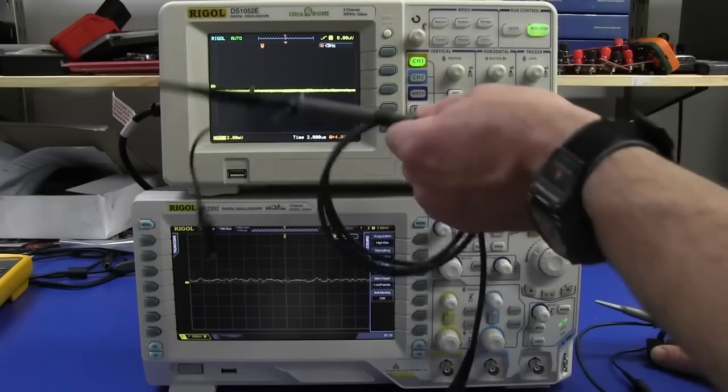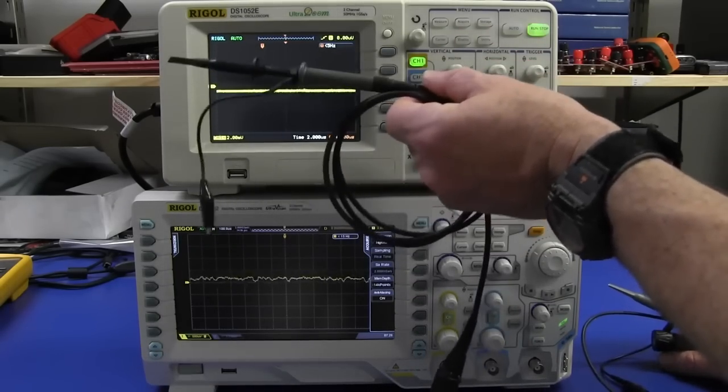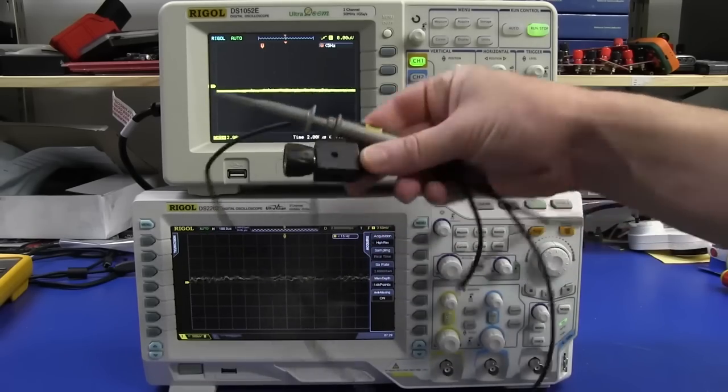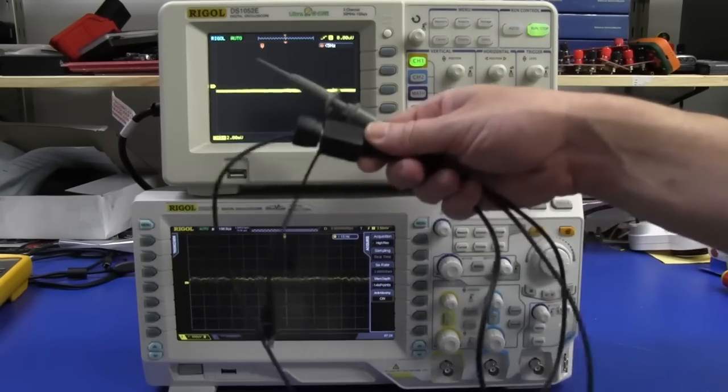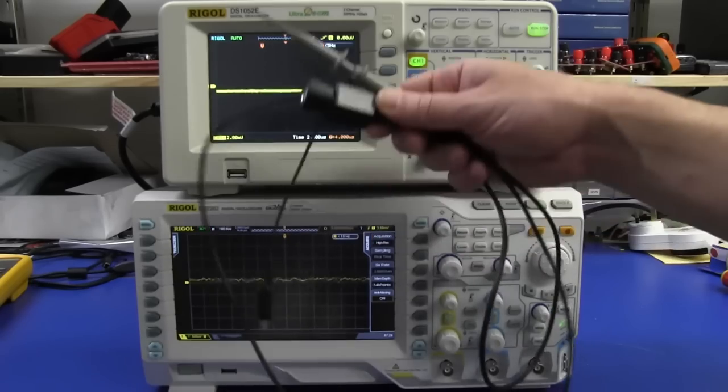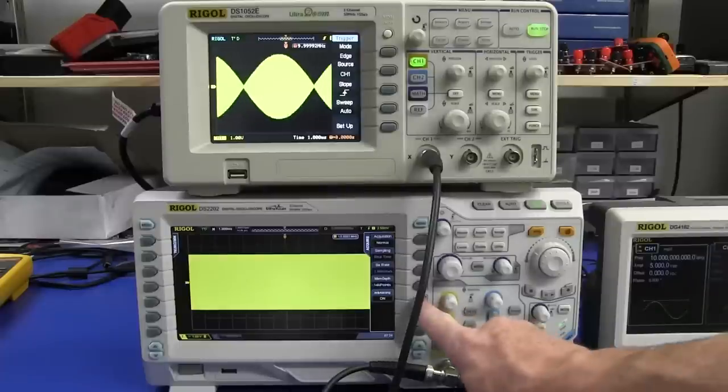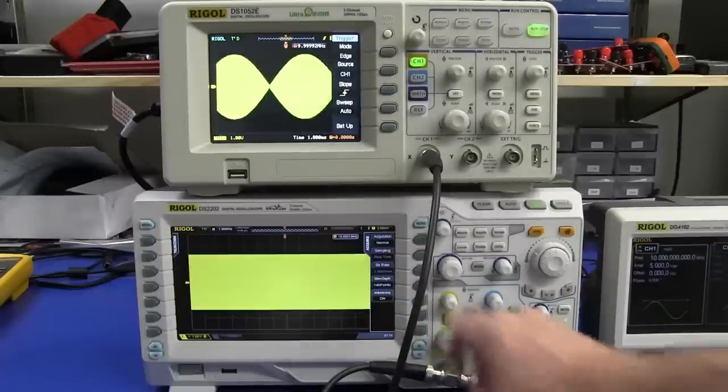One small difference is the probes. With the 1000 series, you only got the standard 100 megahertz passive probe. But with the 2000 series, you get the 150 megahertz passive probe as standard. Even on the 70 megahertz model and on the higher bandwidth model, you get the 350 megahertz passive probe. Excellent. And we have an anti-aliasing mode too. You can see this down here like this.